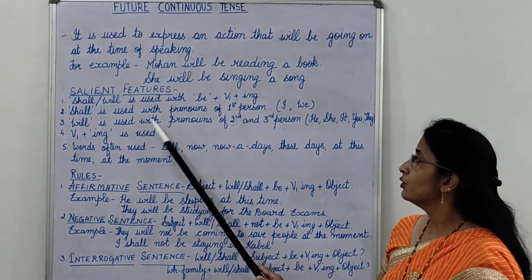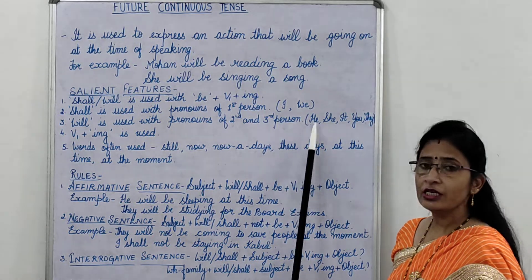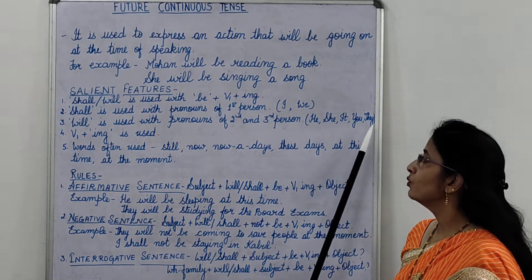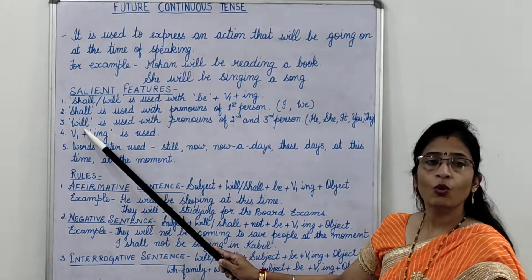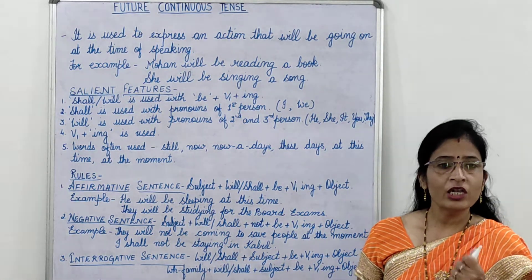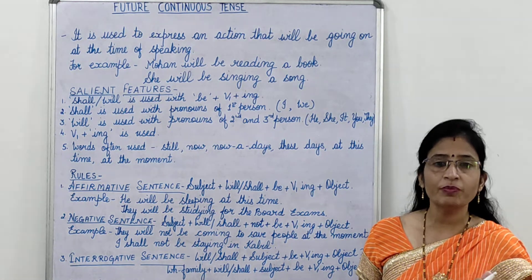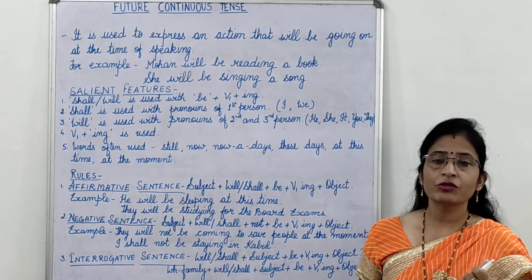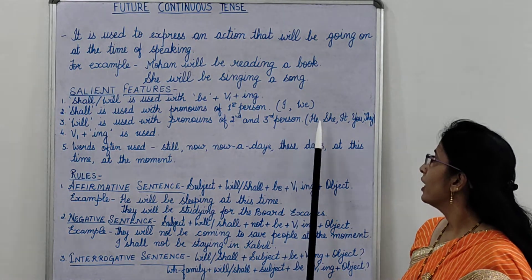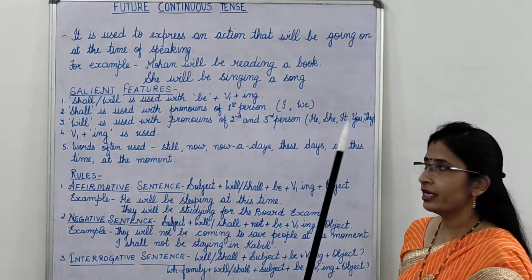Third salient feature is, will is used with pronouns of second and third person — with he, she, it, you, they. Will शब्द pronouns के second और third person के साथ प्रयोग होता है, जैसे he, she, it, you, और they।